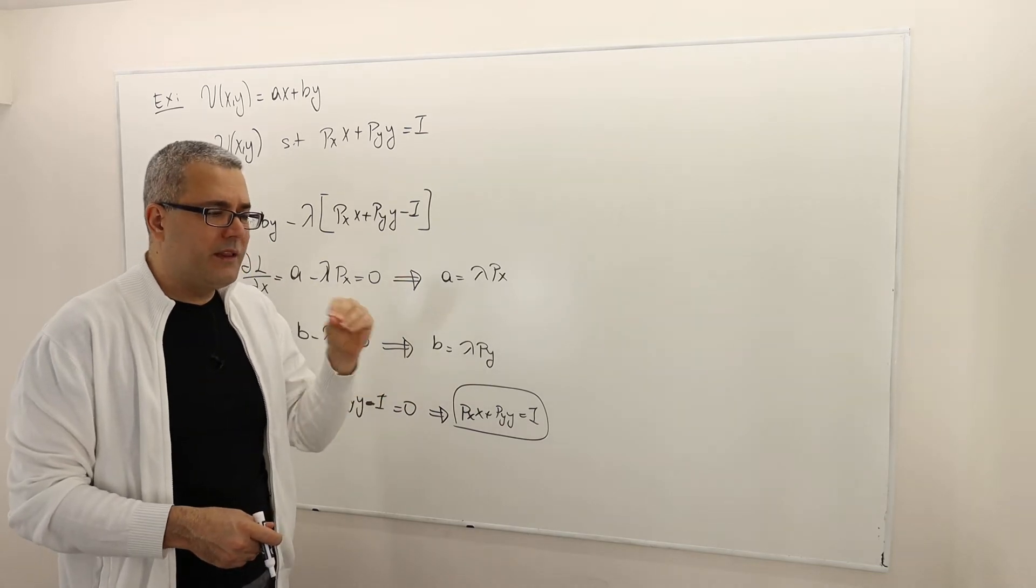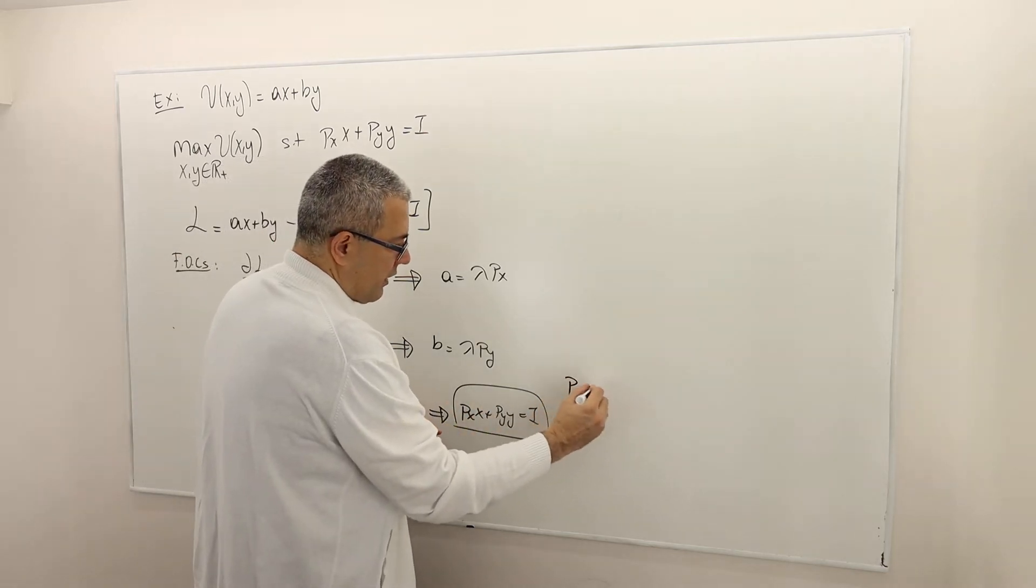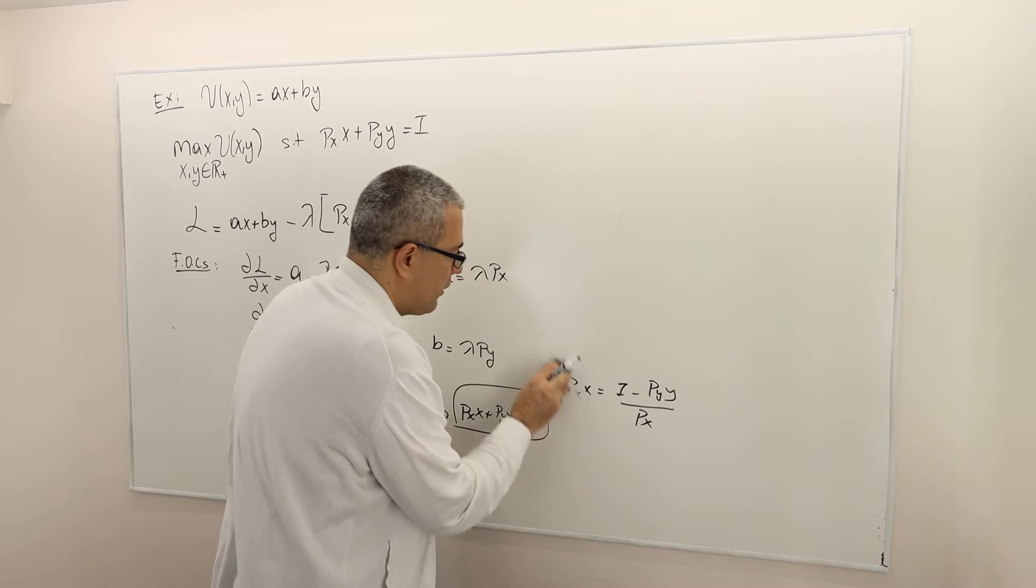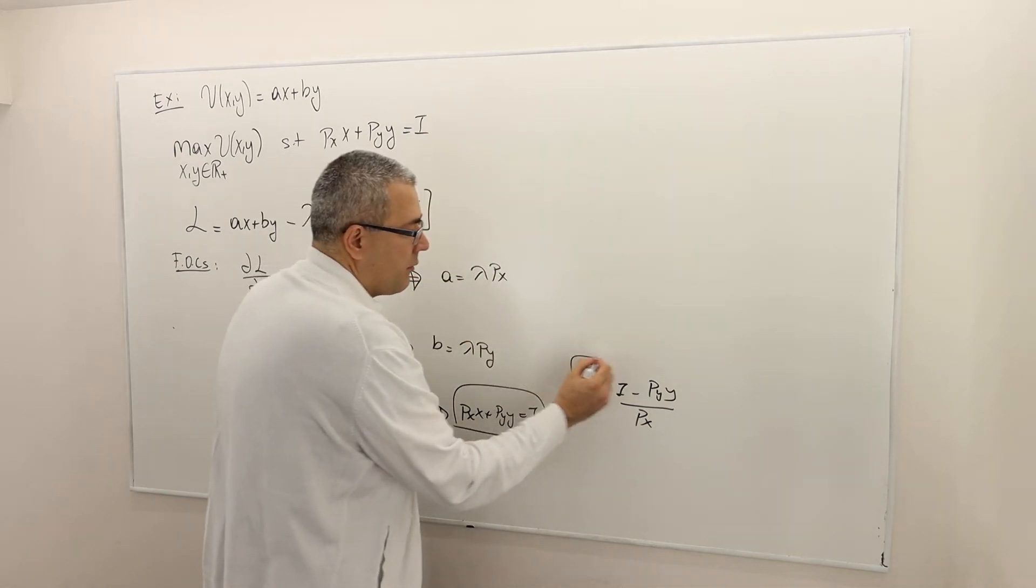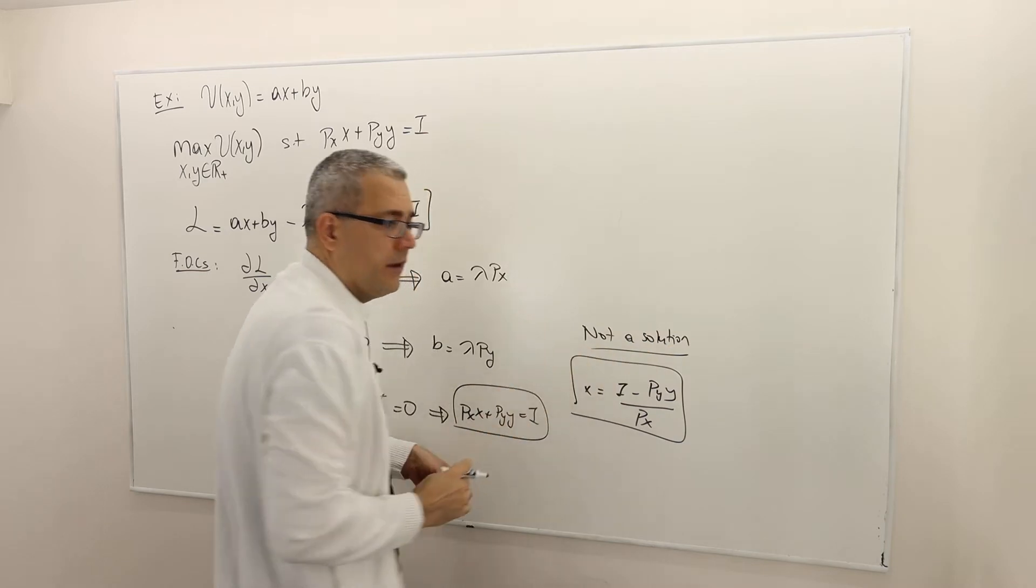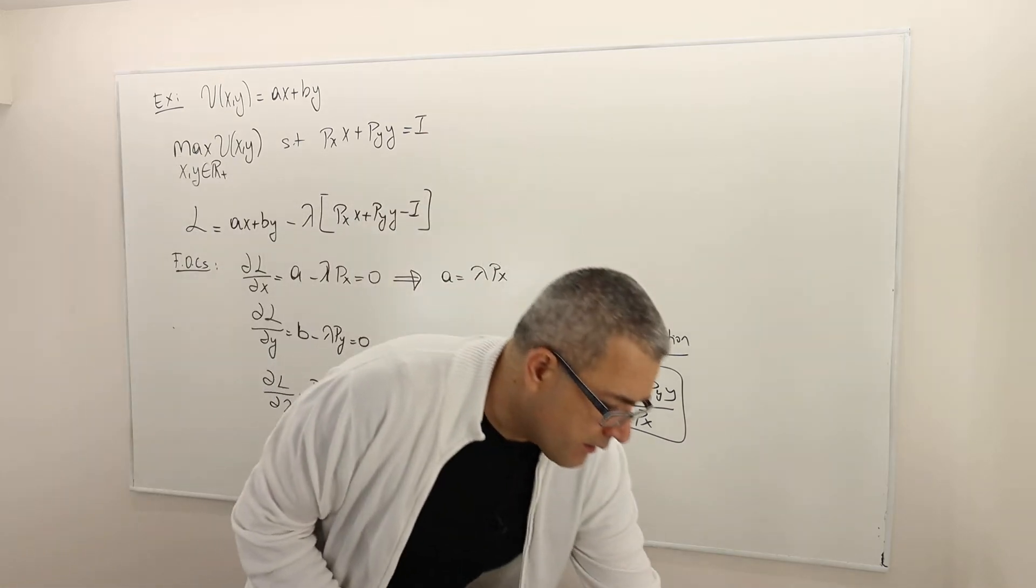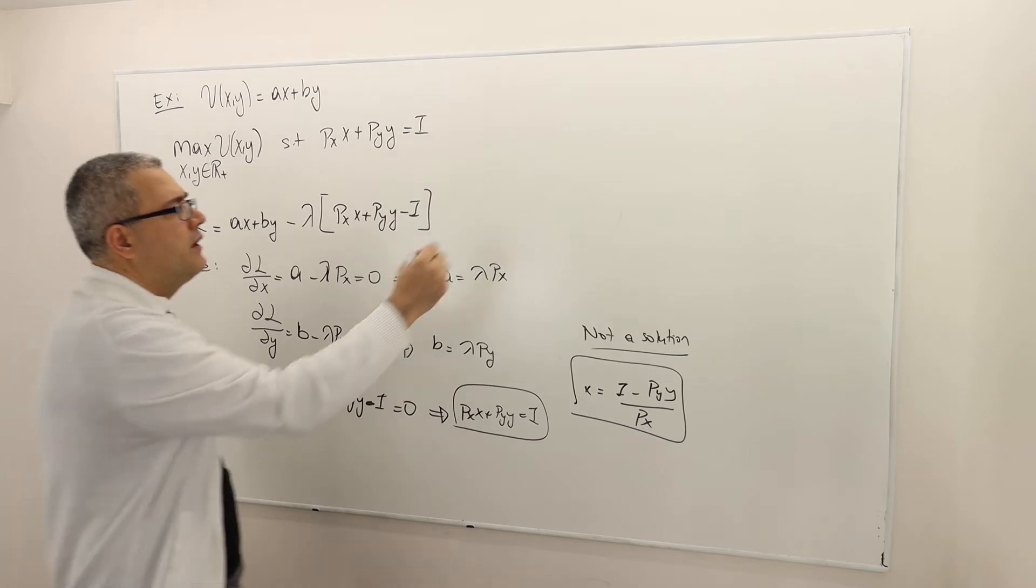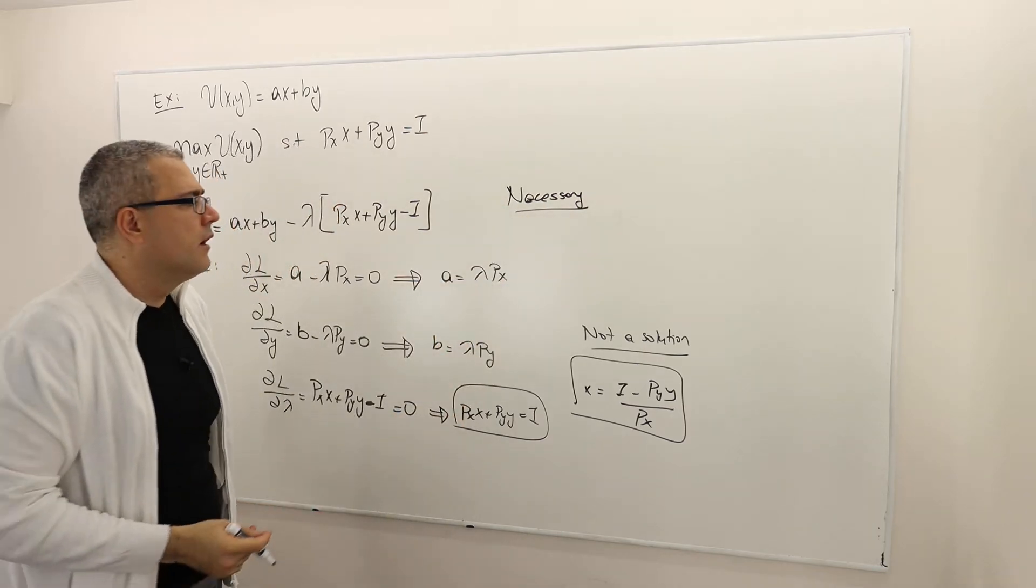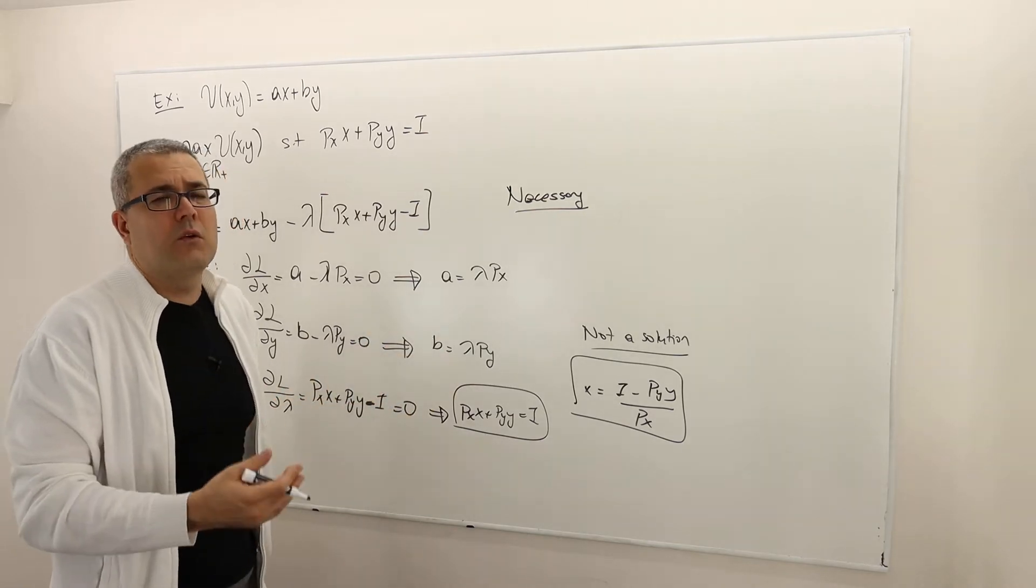So you cannot pin down the exact solution for X and Y. All you can do, which is not a solution, is write X equals income minus PY*Y divided by PX. This is not a solution at all. So what is the problem? The problem is the following: there is no interior solution. Remember, the Lagrangian is just a necessary condition but it's not sufficient. So the Lagrangian method does not always work.